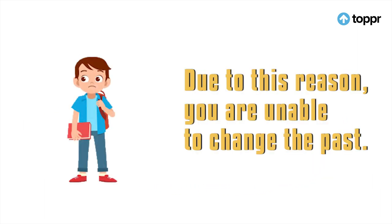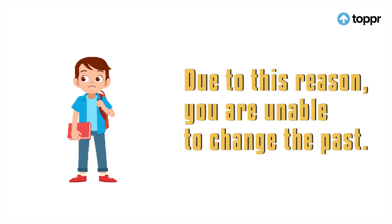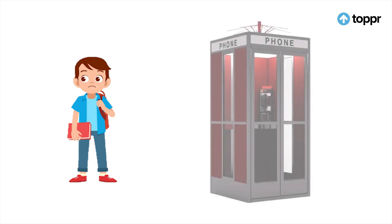Isi wajah se aap past ko badalne mein asamarth rehte hain. Aap ladai ko khatam isliye nahi kar paate kyunki wo ladai hi aapki time machine ke banane ka karan hai. Agar wo ladai hoti nahi to aap time machine banate hi kyun? Shayad ab aap predestination paradox ko samajh gaye honge. Chaliye, iske dusre side ko samajhte hain.